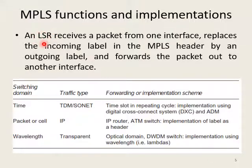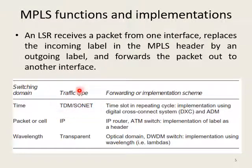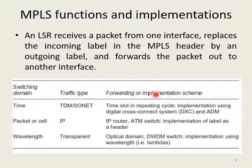Before implementing MPLS, the LSRs (label switching routers) receive packets from one interface, replace the incoming label in the MPLS header with an outgoing label, and forward the packet out of another interface. Labels are exchanged between routers. One type of traffic-based implementation is TDM or SONET, which is time-slot based — switching happens within a time slot using cross-connect systems along with ADMs.